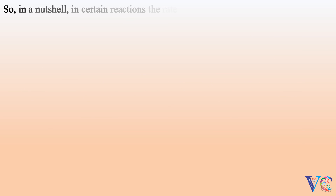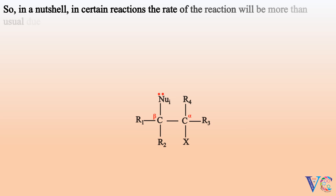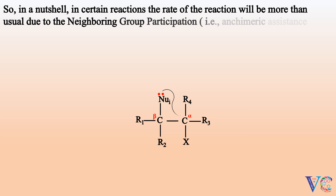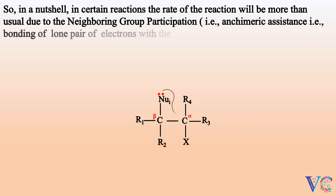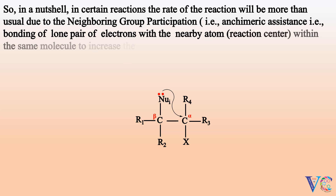In a nutshell, in certain reactions the rate of the reaction will be more than usual due to neighboring group participation — that is, anchimeric assistance — which is the bonding of the lone pair of electrons with the nearby atom, i.e., the reaction center, within the same molecule, to increase the rate of the reaction.